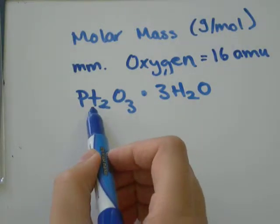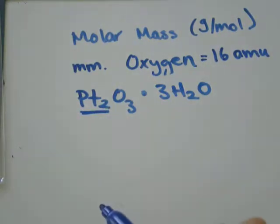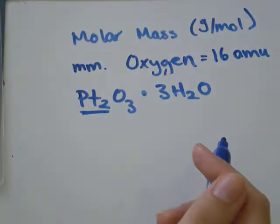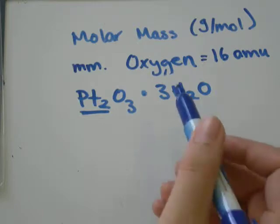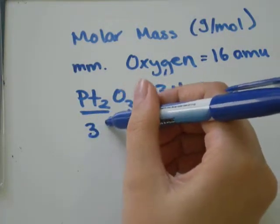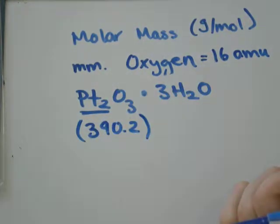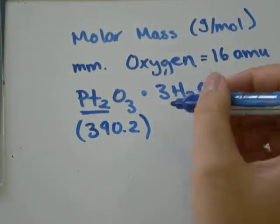So we have Pt2O3·3H2O. So, the mass of Pt is 195.1. So, 195.1 times 2 would be, because we have two atoms, we had 390.2 grams per mole or amu for that one,